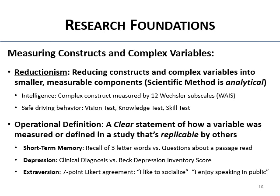Extroversion could be operationalized using Likert scales — one to seven 'I agree' type items: 'I like to socialize,' 'I enjoy speaking in public' — higher scores suggesting more extroversion. Friendliness could be defined as the number of close friends a person has, or someone else might define it as the amount of time spent with friends. Two different ways of operationally defining the same variable for studies.